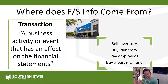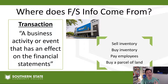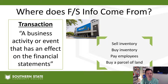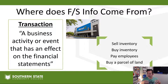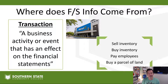The financial statement information comes from all the transactions that happen during the period. A transaction is simply a business activity or event that has an effect on the financial statements. Think about Walmart: when they sell inventory, buy inventory, pay employees, buy or sell land, or pay the electric bill — all of those are transactions.